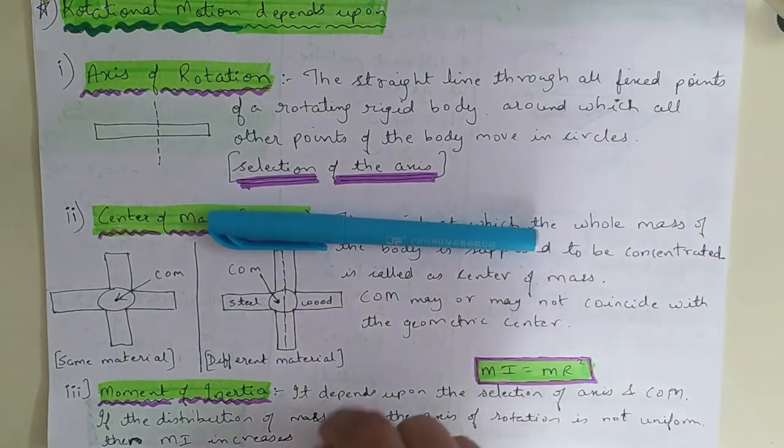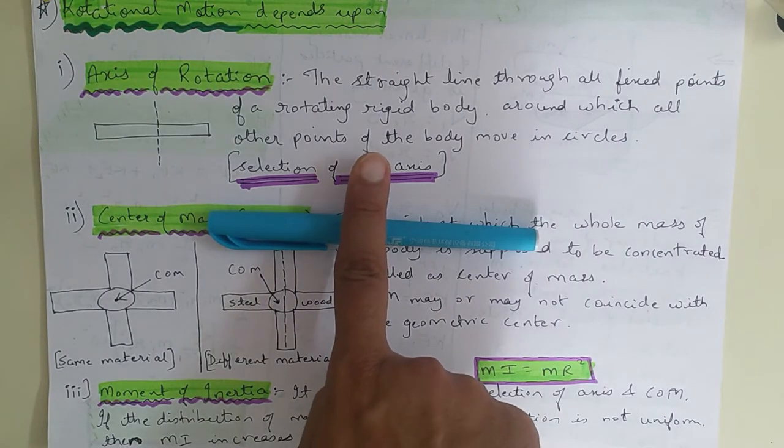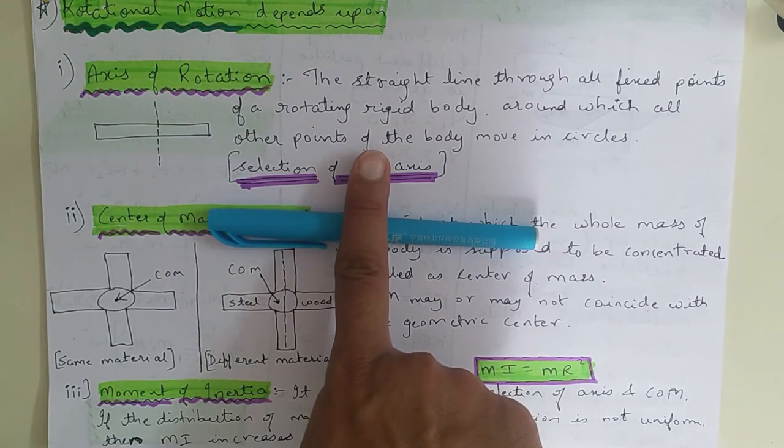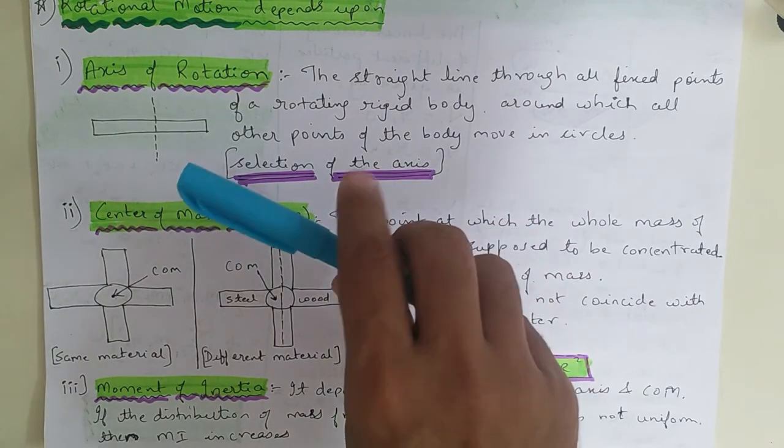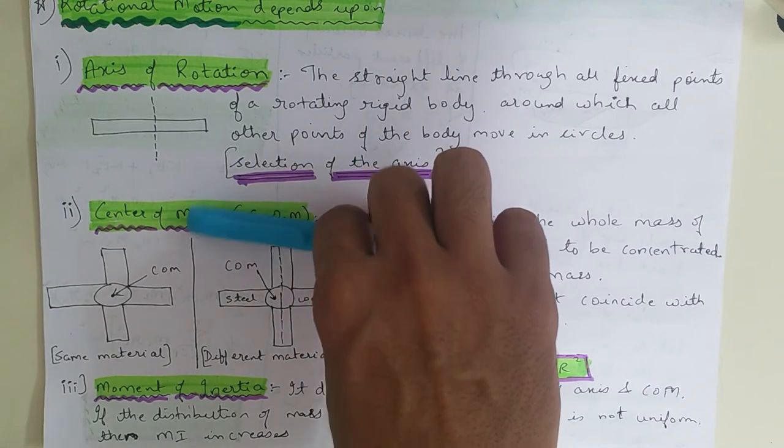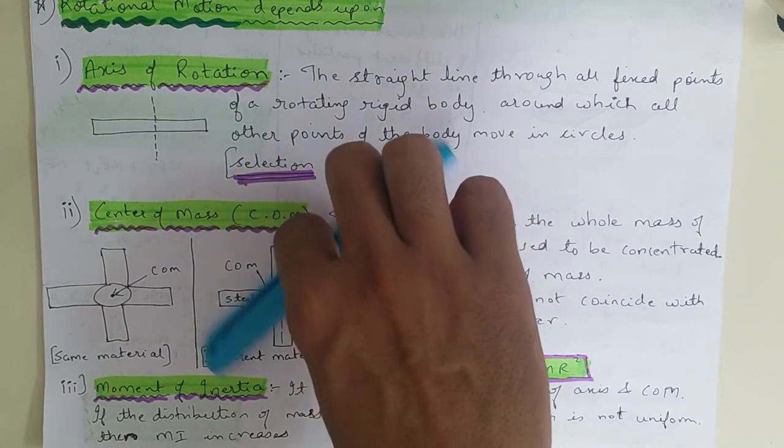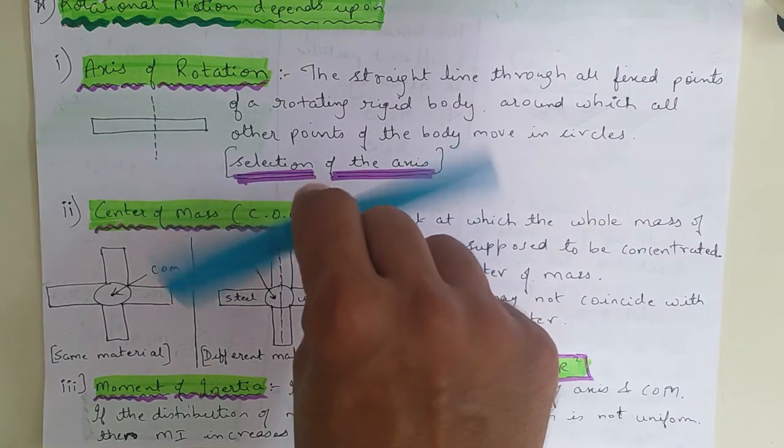This is the pen. If we see the pen, its axis will pass from here. What is the axis? Where its mass is equally distributed at every point. Means if I hold the pen from here and rotate it, it's rotating easily. You can see that I can easily rotate this. I can easily rotate this.